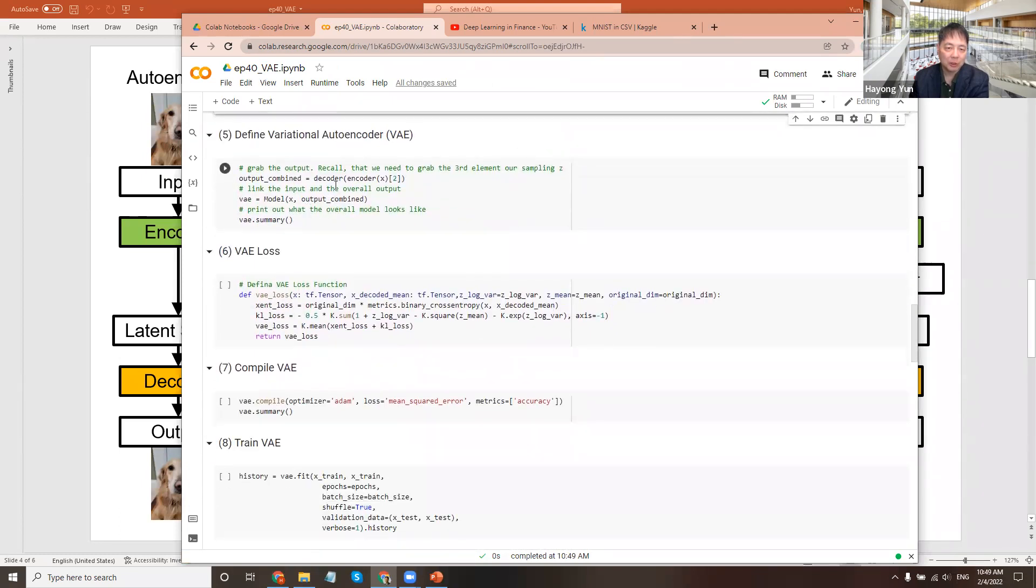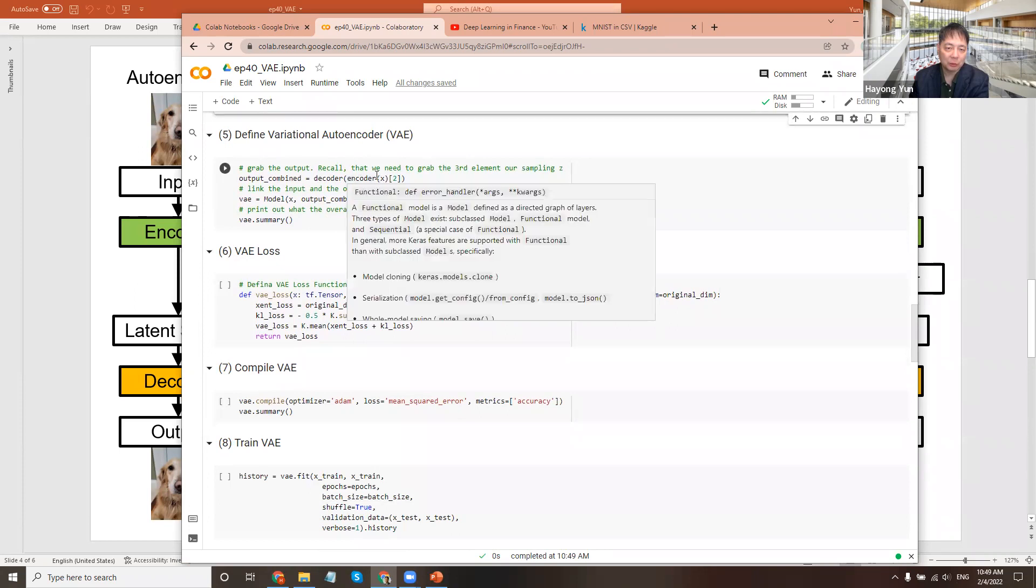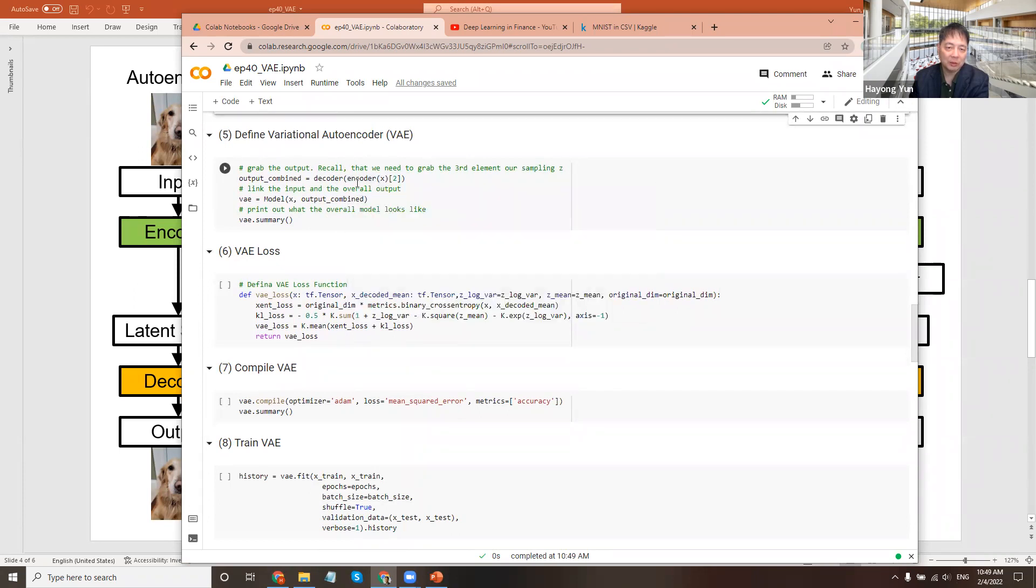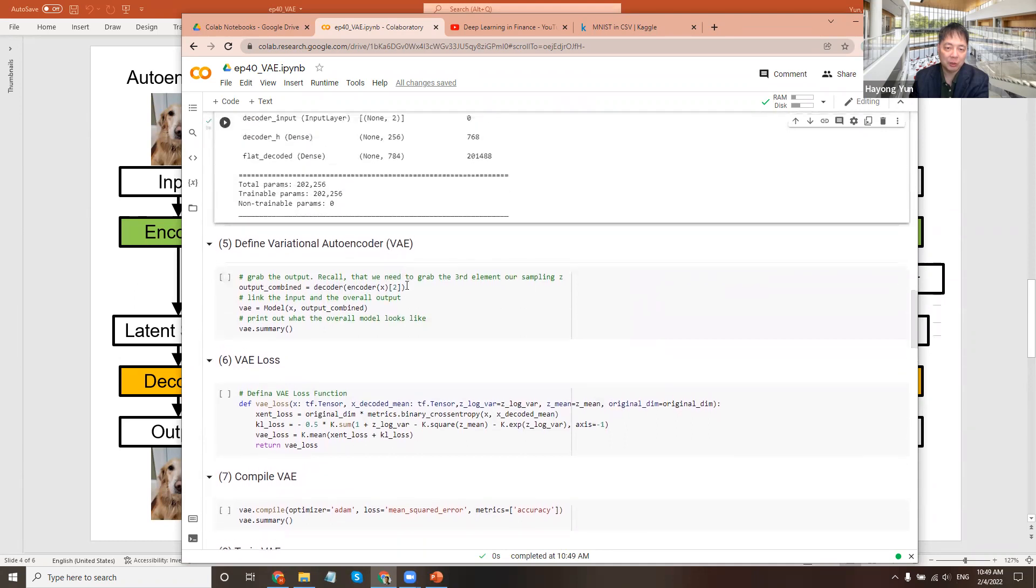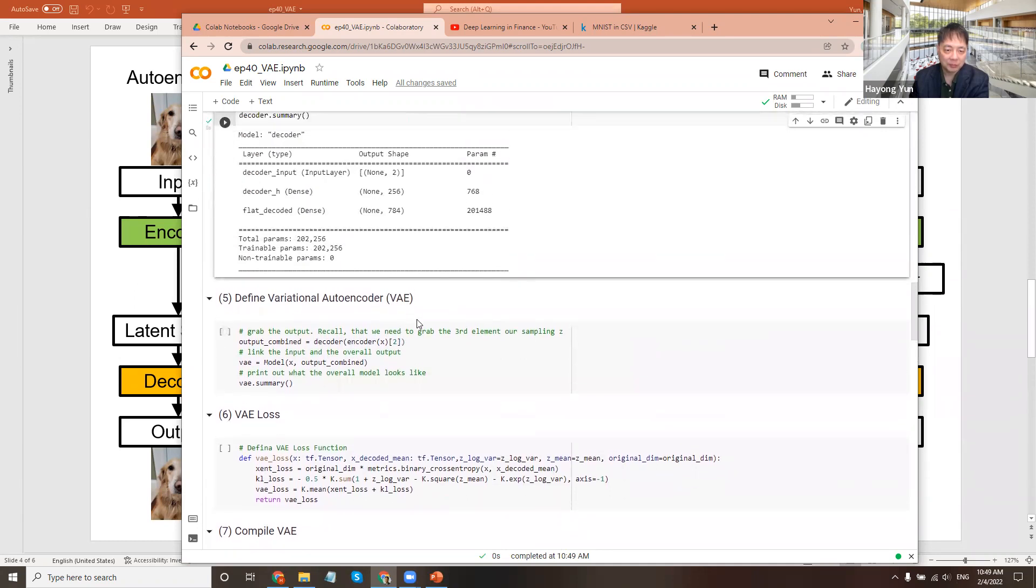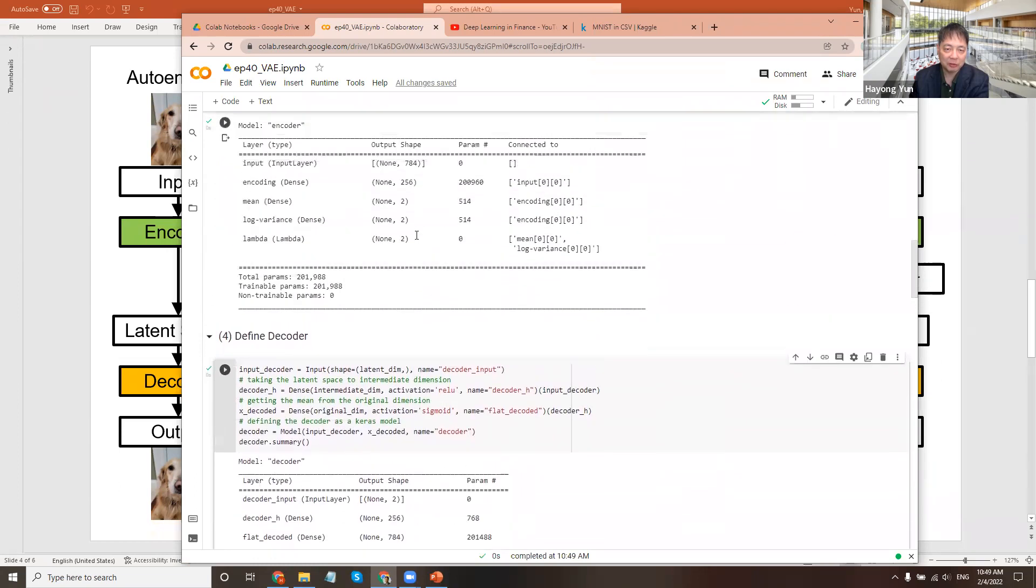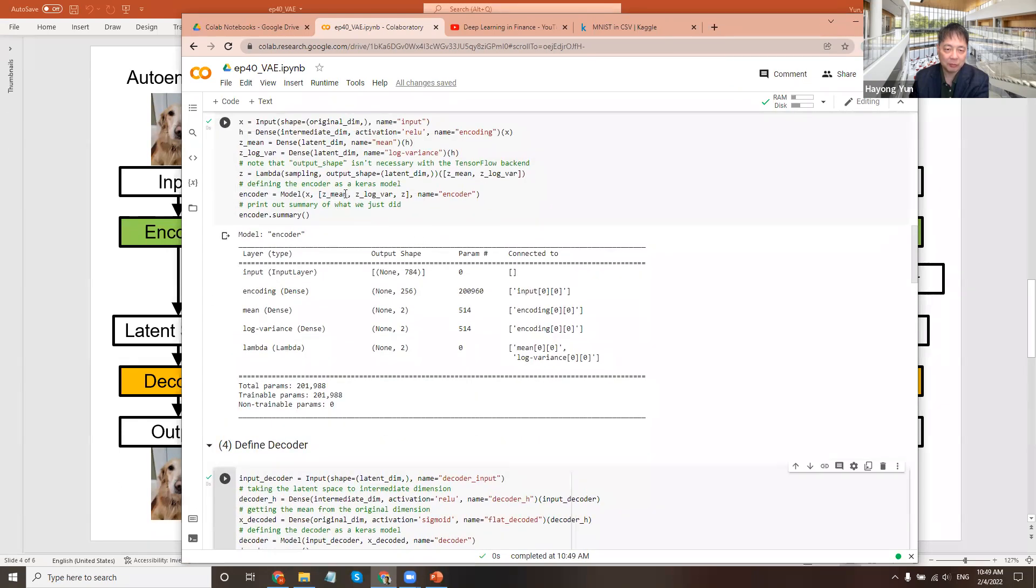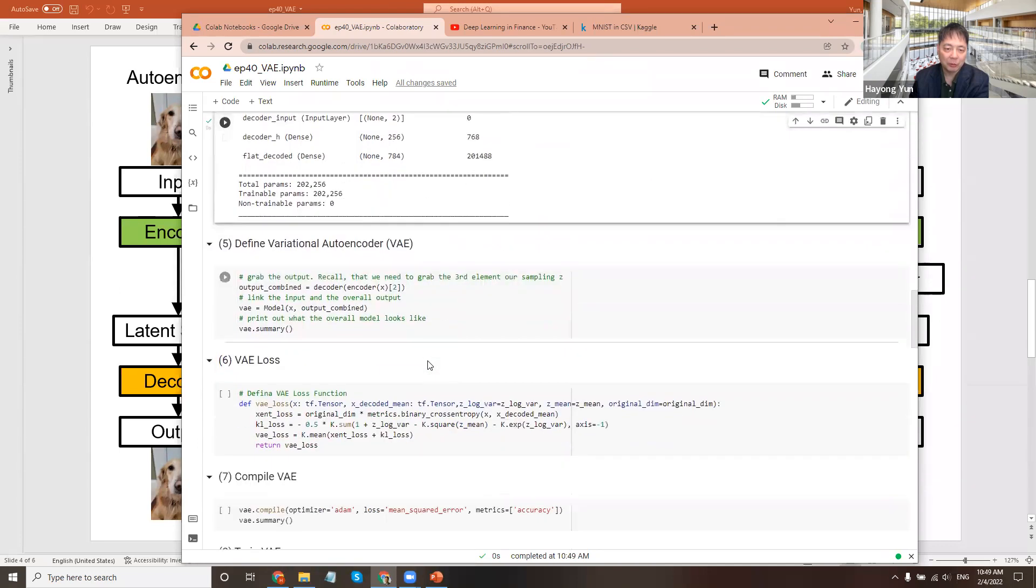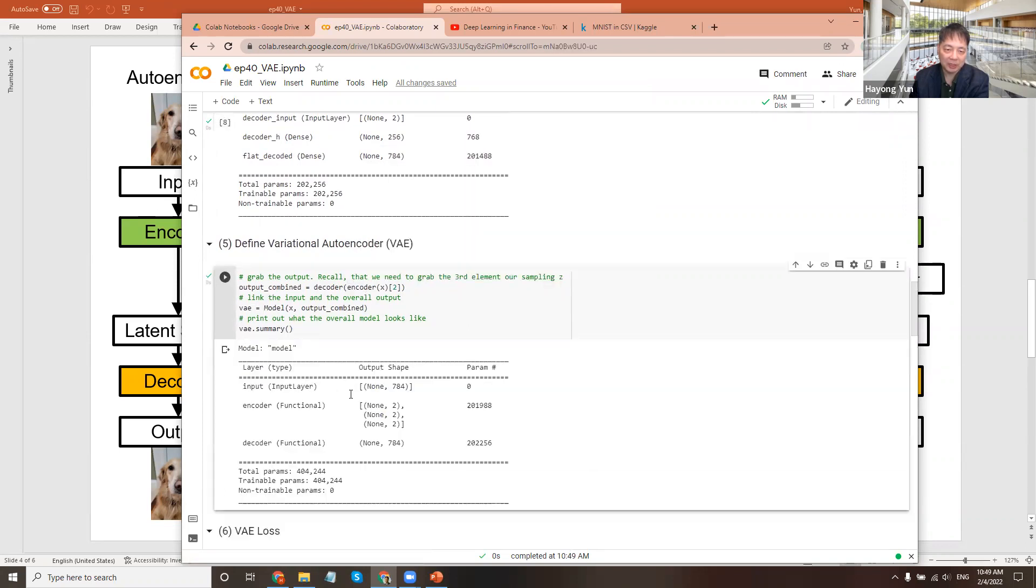The variational autoencoder takes an x, goes through an encoder, and then a decoder. We want the encoder number two, which is the z that we want to give it. Remember, the encoder gives the mean, the variance, and z - so 0, 1, 2. We are going to give the decoder number two, the z, to recreate and call it VAE model.